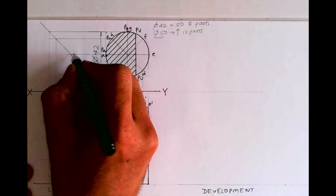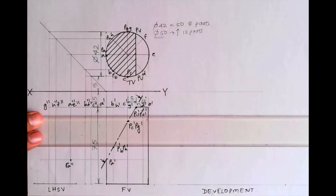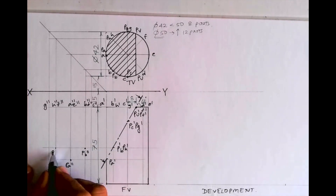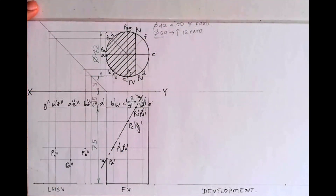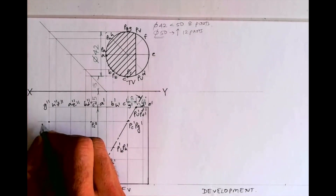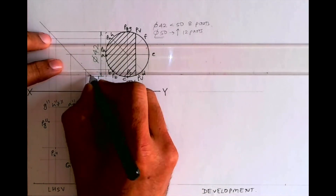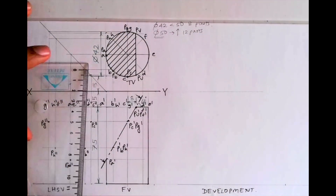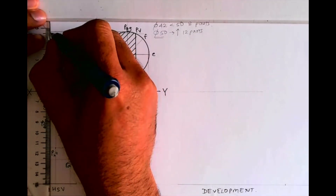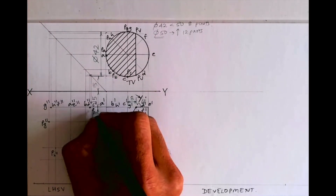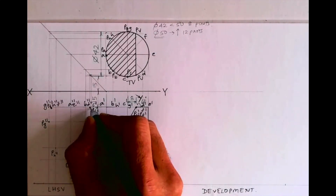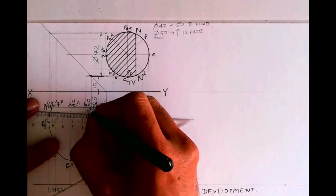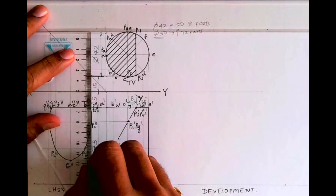Now for the side view, I'm projecting points. This is pa-double-dash. I'm projecting b and h from the front view — wherever it cuts on b-double-dash that is pb-double-dash, and on h-double-dash that is ph-double-dash. Same with c and g: pc-double-dash and pg-double-dash. For pu-double-dash and pv-double-dash, you can't project from the front view, so we project from the top view. This is pu-double-dash and this is pv-double-dash — this is what you get for the sectional left hand side view.